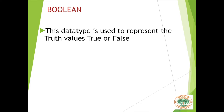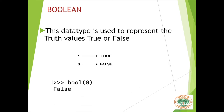Let us go to the next number data type which is the Boolean type. This data type is used to represent the truth values true or false. Here 1 represents true and 0 represents false. We have only 2 accepted values: 1 for true and 0 for false. If I give bool(0) in the interactive mode I will get false, and if I give bool(1) I will get true.